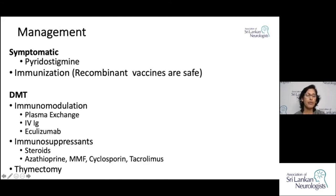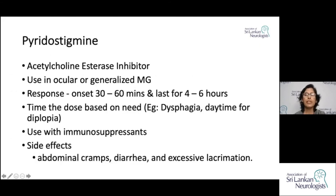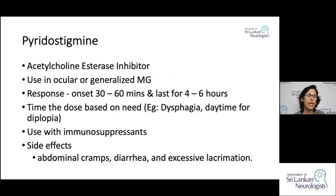There is also a place for thymectomy in the management of Myasthenia Gravis. Pyridostigmine gives symptomatic relief for about 4 to 6 hours, but more often does not give complete remission or complete control of symptoms. Before the introduction of immunosuppression, patients were given increasing doses of pyridostigmine until they ended up with cholinergic crisis.